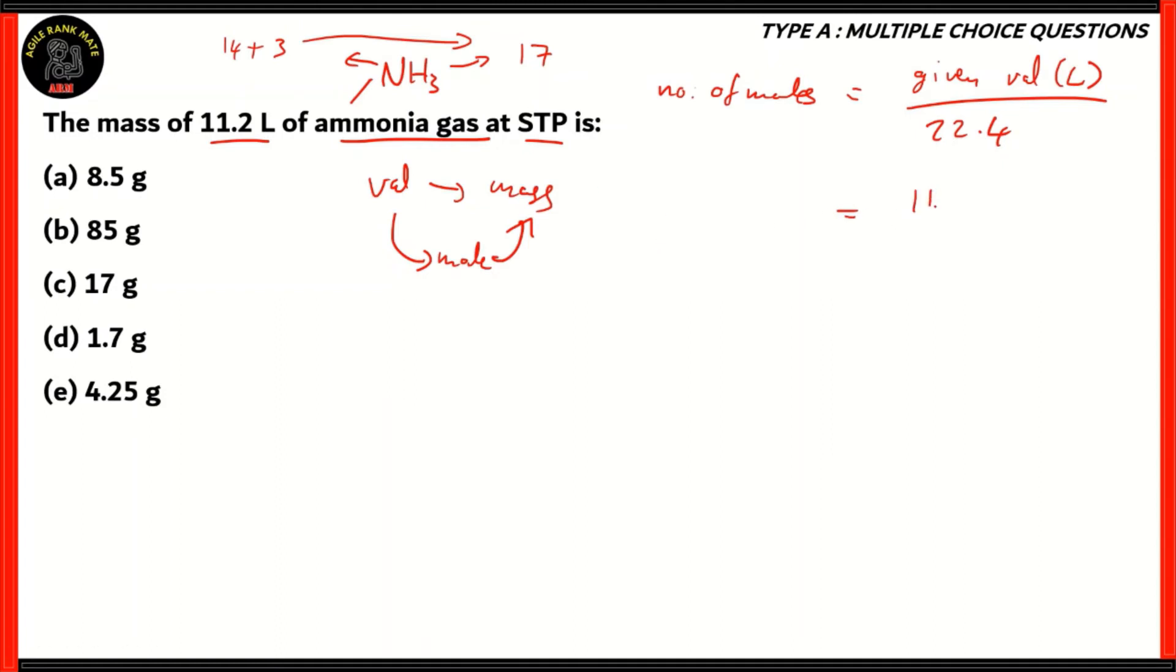In this case, it is 11.2. So you can divide it by 22.4, remove the decimals, and you have 112 divided by 224. Simple case, really, 112 multiplied by 2 gives you 224. Therefore, the number of moles is equal to half, which you can also write as 0.5 moles. Now that you know the number of moles in 11.2 liters of ammonia gas, we need to find out the mass. The mass of 11.2 liters of NH3 would be equal to the number of moles times the molar mass, which in this case is 17.